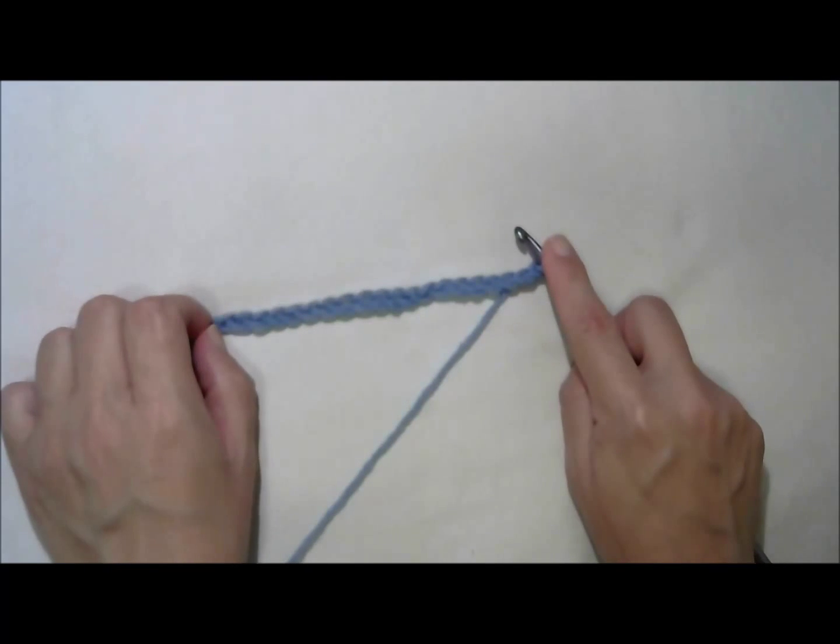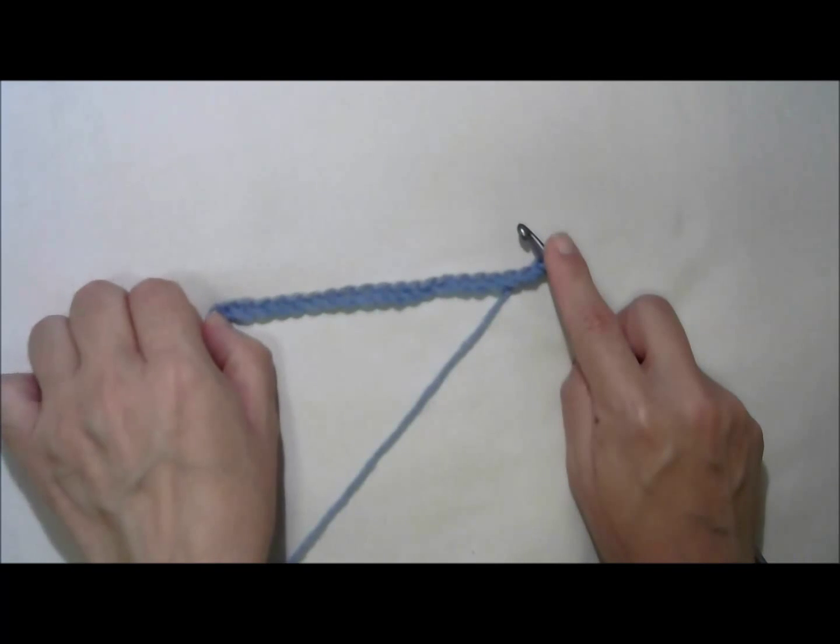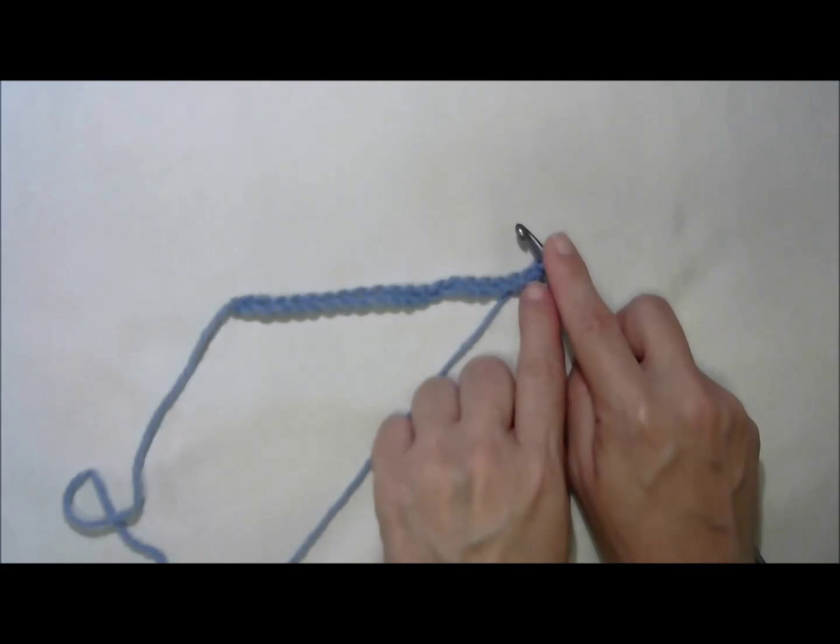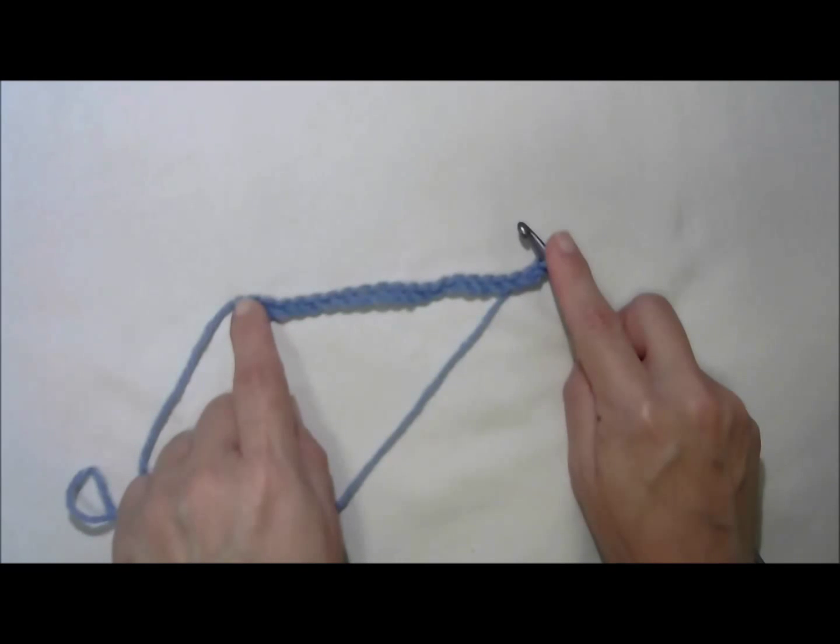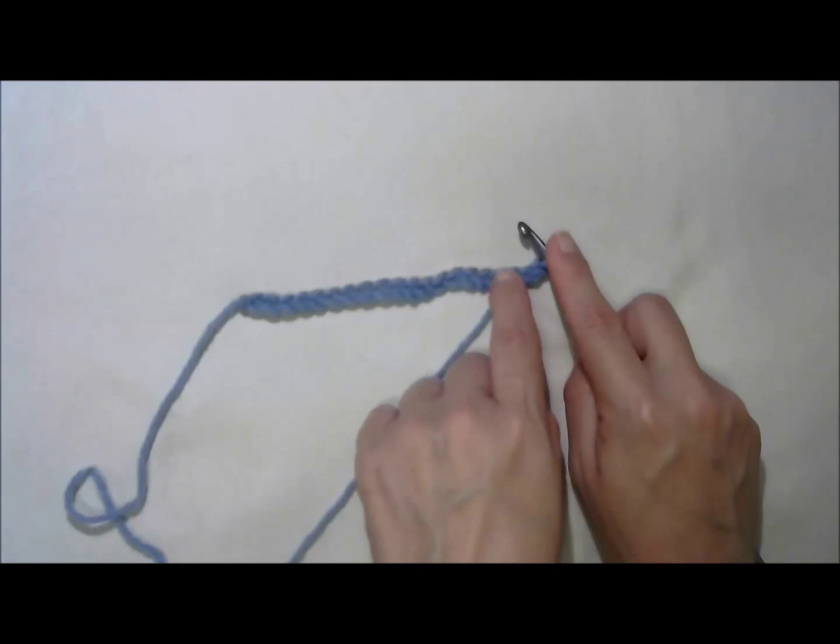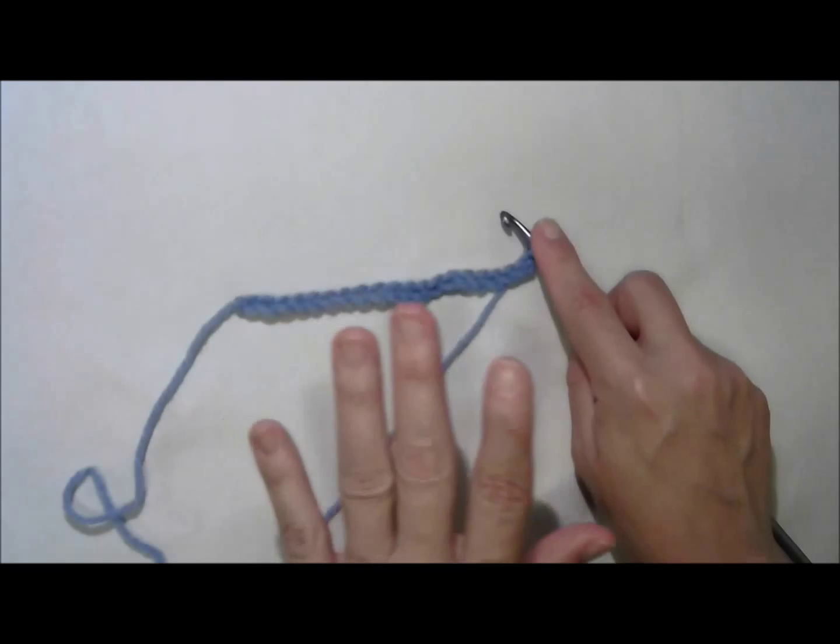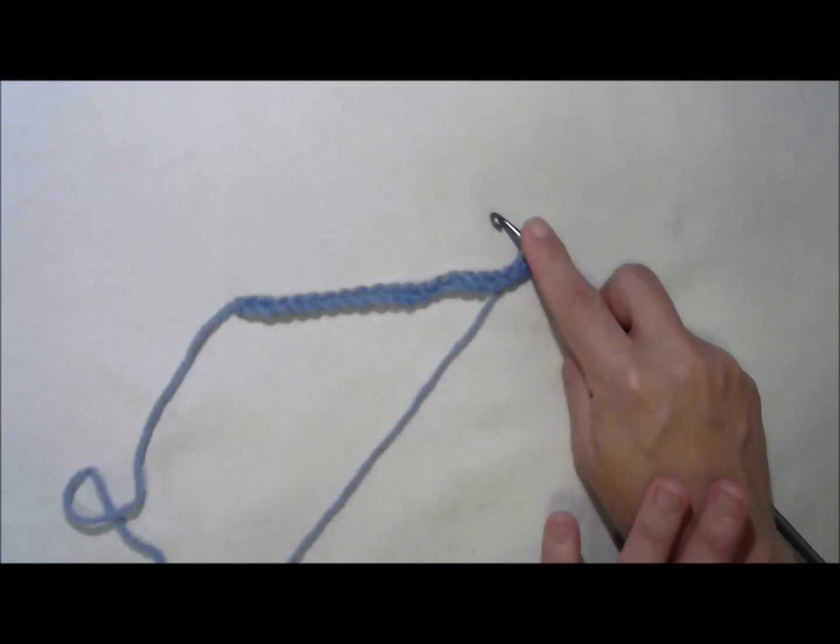I'm going to do what's called the foundation row. Sometimes in patterns, it's called the setup row. And I need to push into every single one of these chain stitches. Push in with my hook, yarn over the hook, draw up a loop, and leave the loop on the hook because we're going to stack up a bunch of live loops.